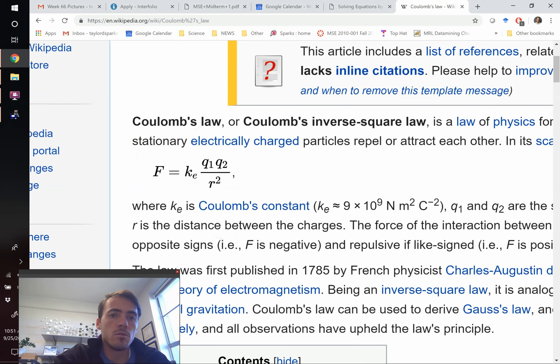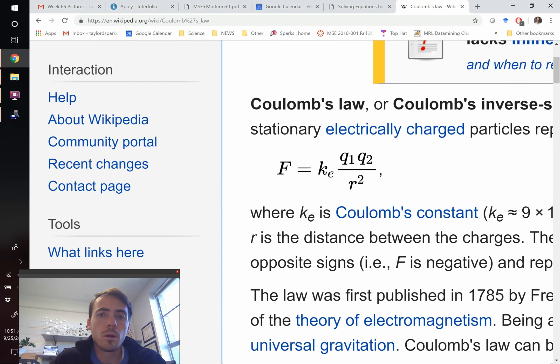From physics, you remember this expression. Coulomb's law tells you that the force between two charged particles is given by a constant multiplied by q1 times q2, that's the charge of your two particles, divided by r squared, and that's the separation between these two particles.